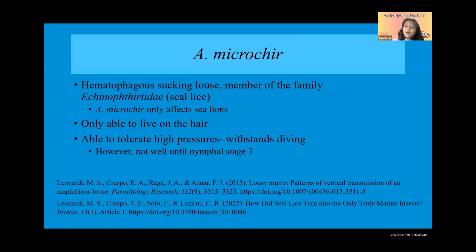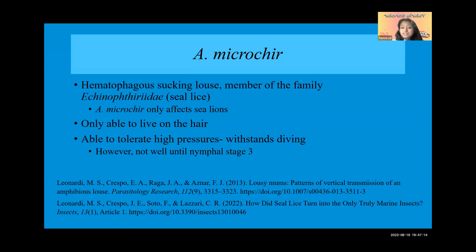Because this is a sucking louse, it is only able to live on the hair, so eggs are also laid on the hair — you won't find these on the flippers or the nose. Some adaptations include being able to tolerate really high pressures and withstand the diving depth that Australian sea lions reach. However, they cannot withstand it well until nymphal stage three, and they cannot tolerate salinity until nymphal stage two, meaning for most of their life they must live ashore.